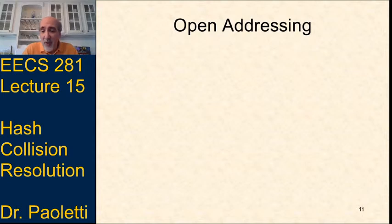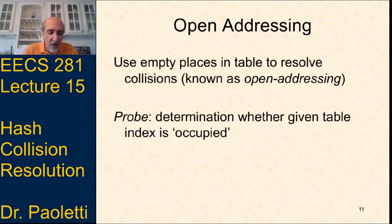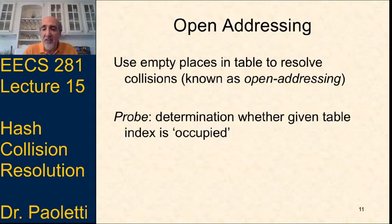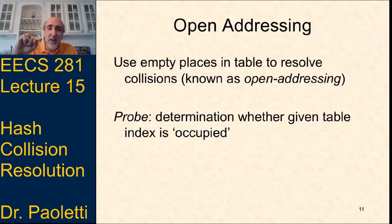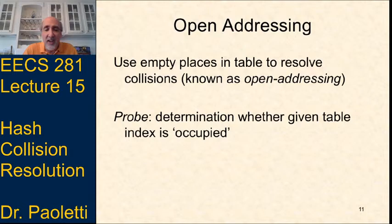Now let's look at open addressing — a different way of handling collisions instead of linked lists. The idea is we find an open position in the table and put the item there. A probe determines whether an index in the table is occupied. We have to do at least one probe because the hash function gives us an index, and we check whether that location is occupied. If there's nothing there, the item we're looking for isn't in the table. If it's occupied, we check if it has the right key.